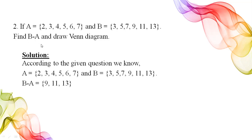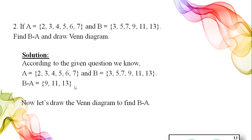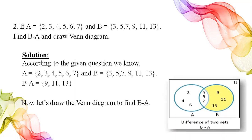So B difference A gives us the elements which are in B but not in A. The answer is 9, 11, and 13. We do not write 3, 5, or 7 because those are also present in set A. This is our Venn diagram.